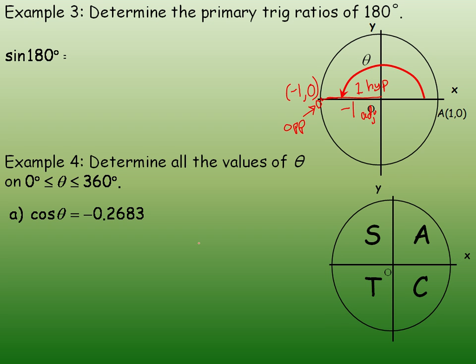The sine, remember, is opposite over hypotenuse. The opposite side is 0, the hypotenuse is 1. So 0 divided by 1 is 0. So the sine of 180 degrees is 0.